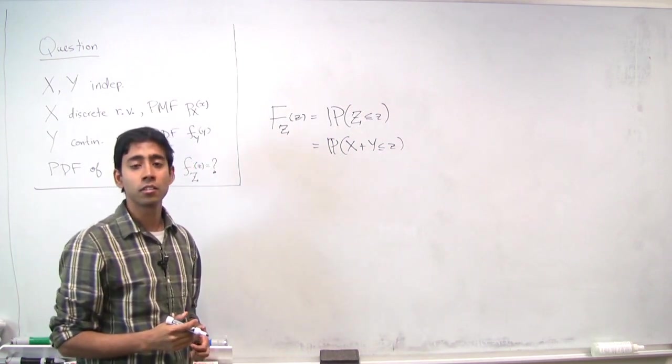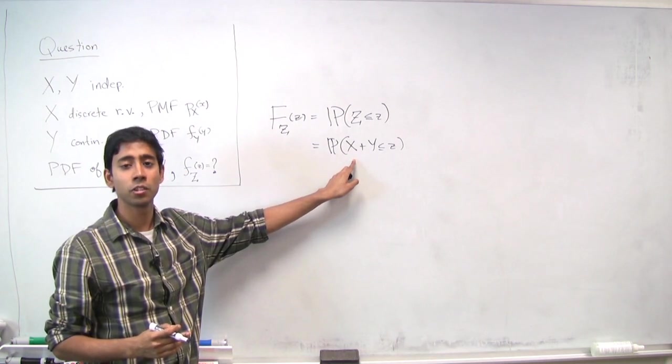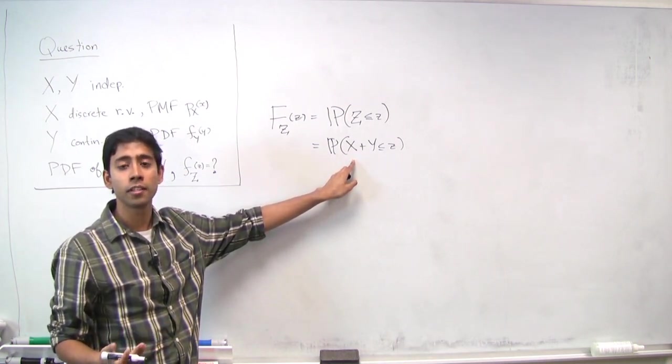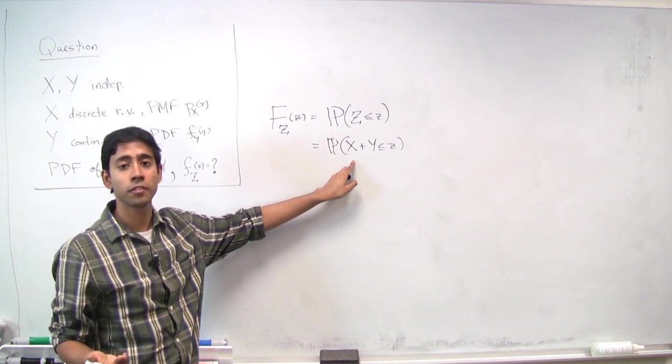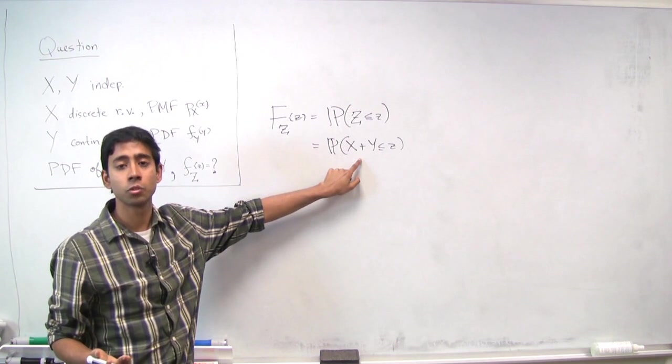So now we'd actually like to, instead of having to deal with two random variables x and y, we'd like to deal with one at a time. And total probability allows us—the total probability theorem allows us to do this by conditioning on one of the two random variables.